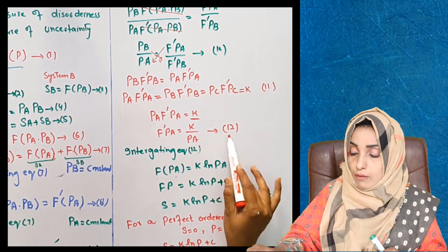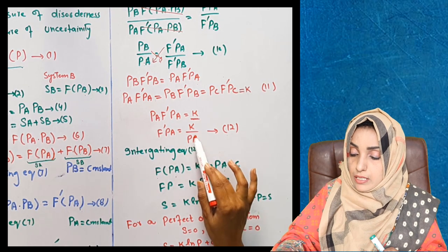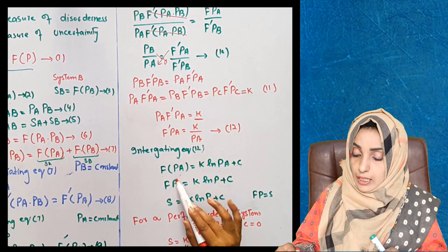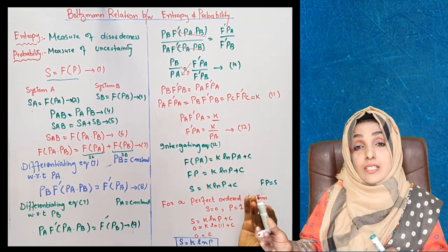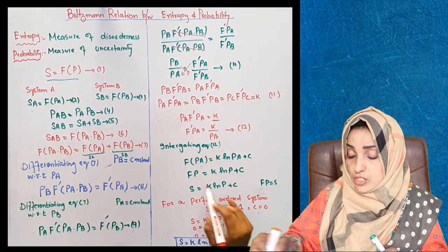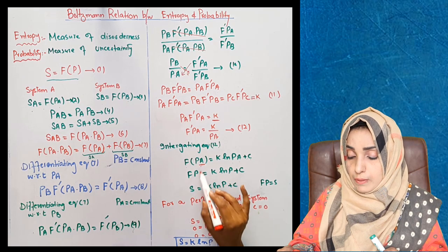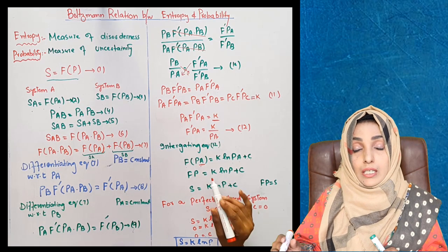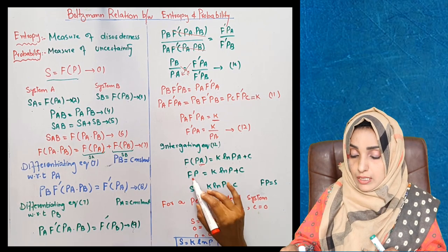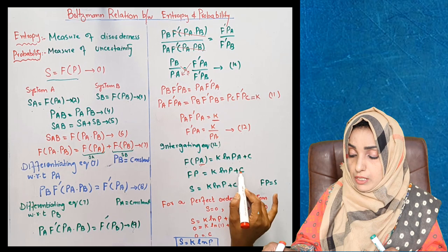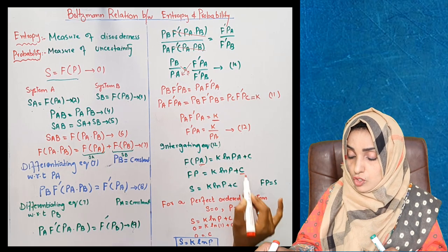This is the integration of equation number 12. After integration we get a straight line equation. If we want to draw this equation for a general system, we can draw it this way. We replace A and write P as general. For any system, this is the representation: F(P) is equal to K log natural P plus C. This is the integration constant.